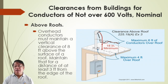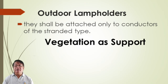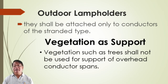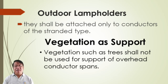Outdoor lamps shall be attached only to conductors of the standard type. Regarding vegetation as support, trees shall not be used for support of overhead conductor responses. Some distribution utilities use trees and other vegetation as conductor supports, but this should not be used — it is illegal.